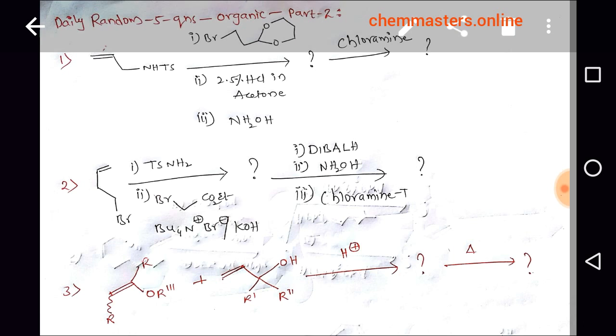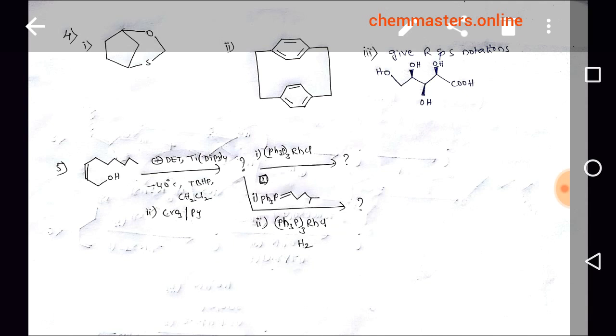Fourth question: give the name and enclosure of first and second according to IUPAC (PIN) naming. Third part: give R and S notations for the given example. Fifth question is about allylic alcohol.